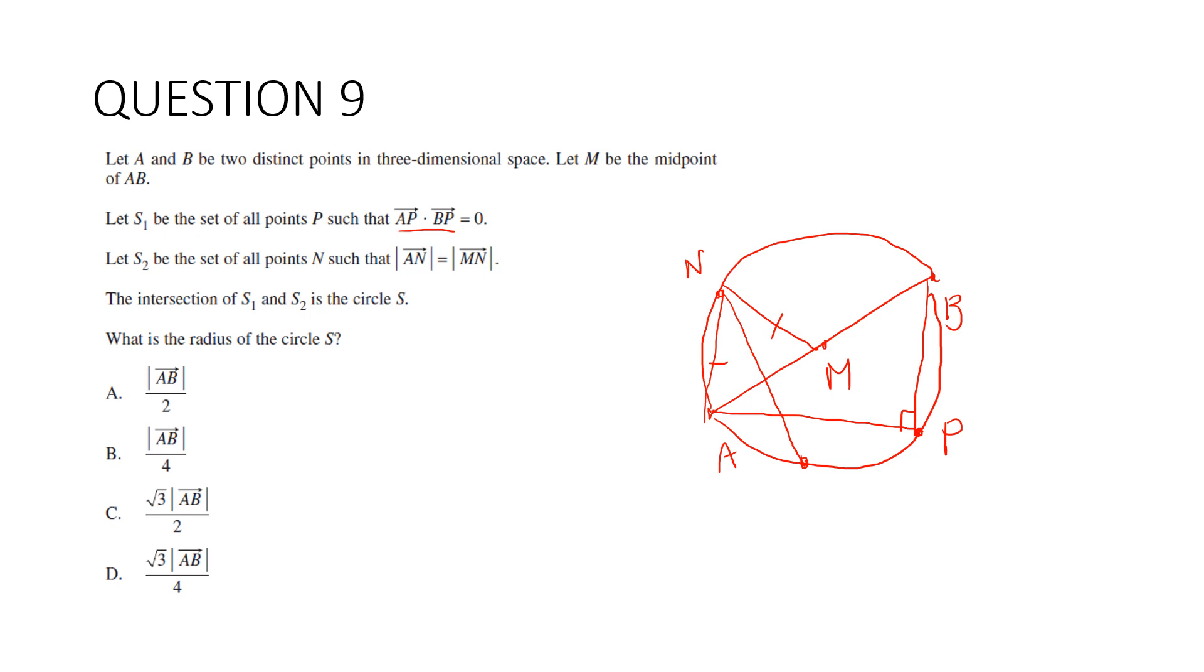The intersection of S₁ and S₂ is the circle s. What is the radius of the circle s? Hard to draw on the screen, but because S₁ is a sphere and S₂ is actually going to be, where they intersect is going to be a circle. It's going to be like a slice of this sphere. In that circle, this is going to be the radius here. So we just need to work that out. And we know that's going to be a right angle there.